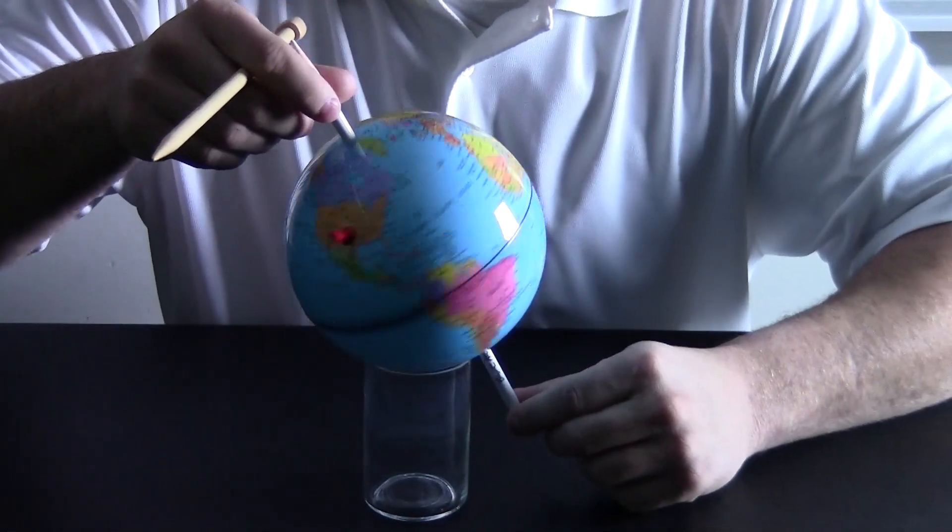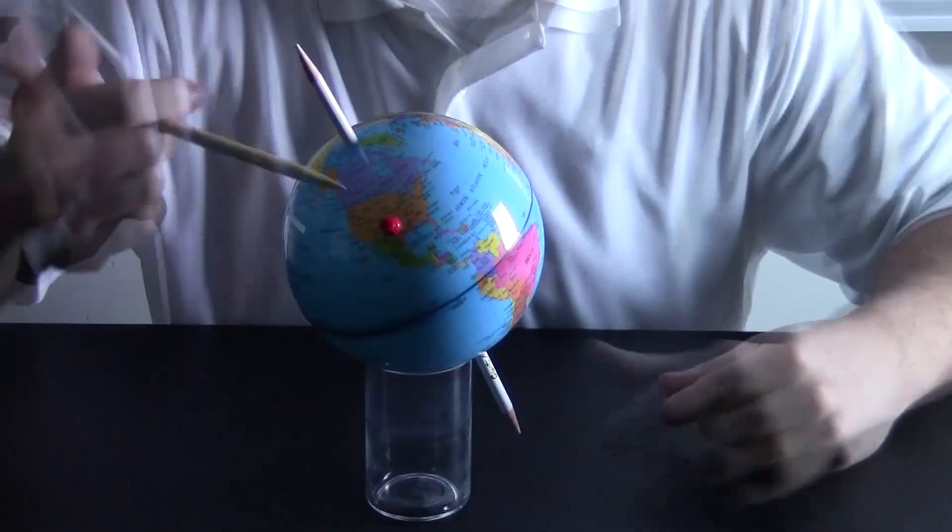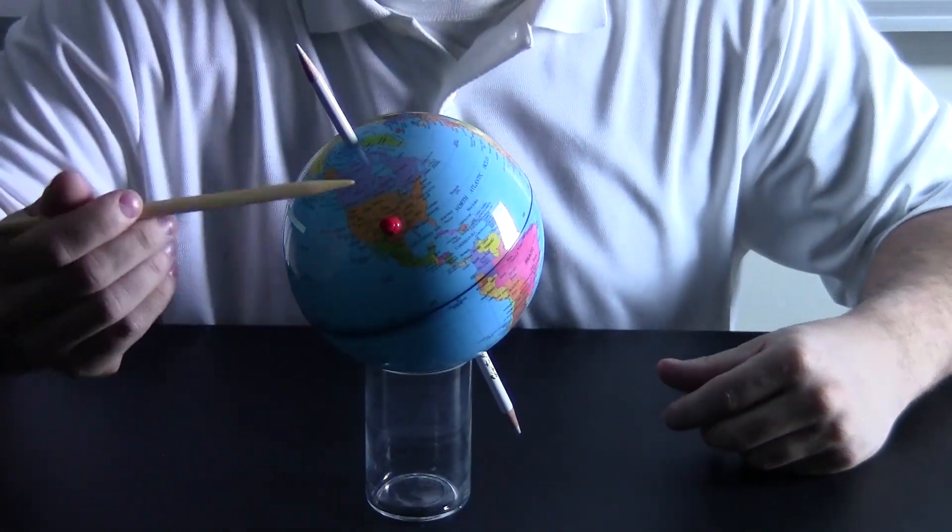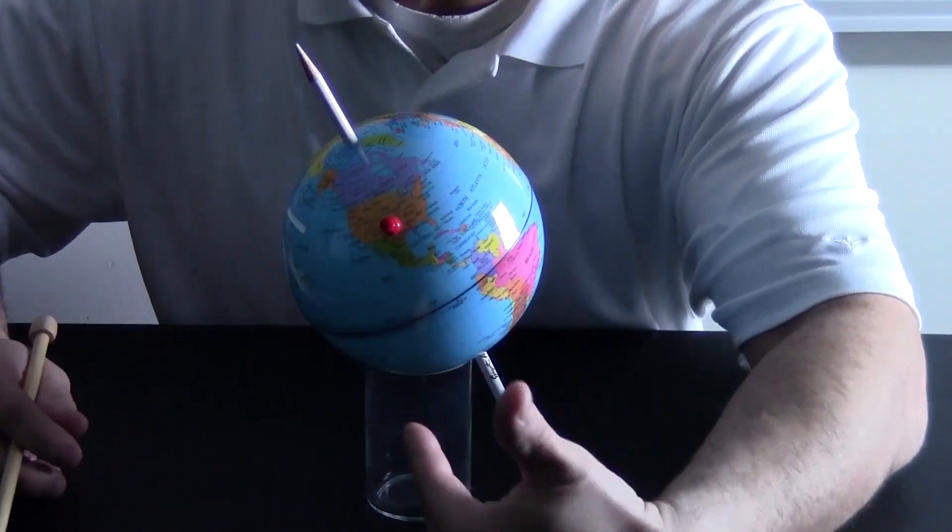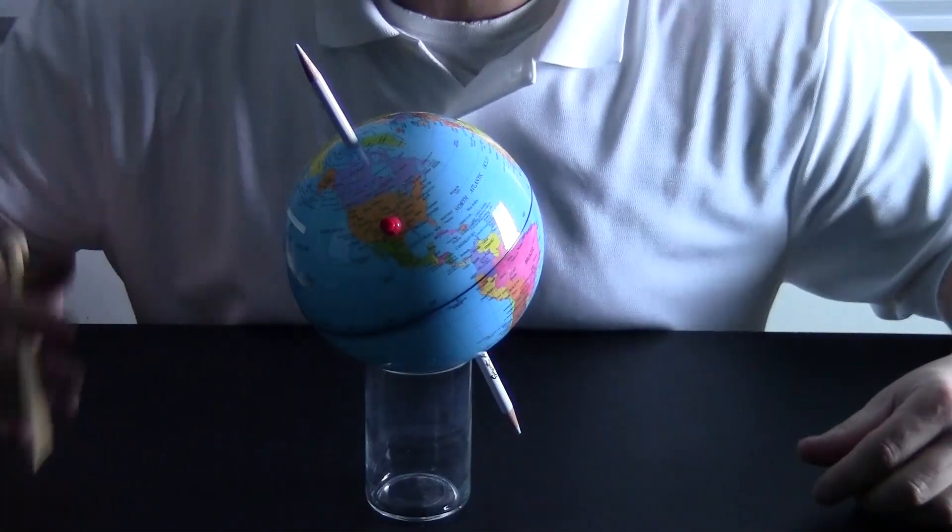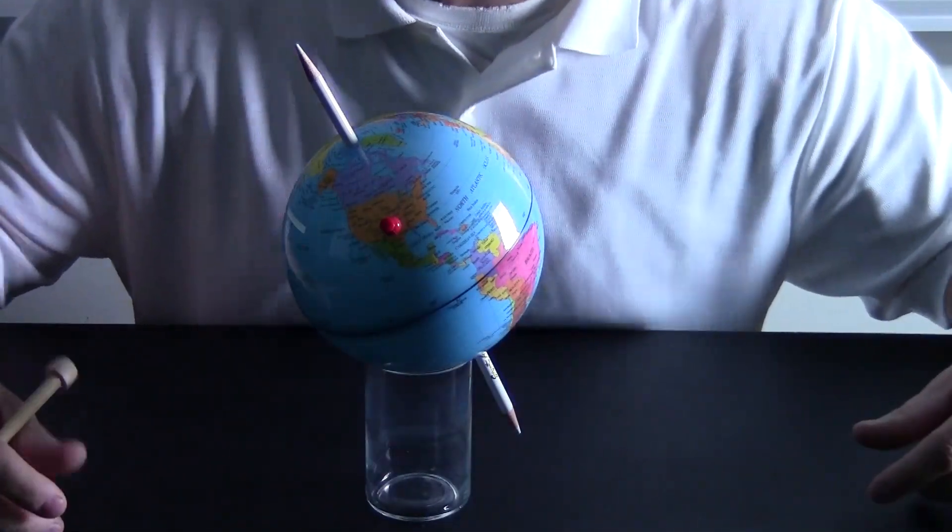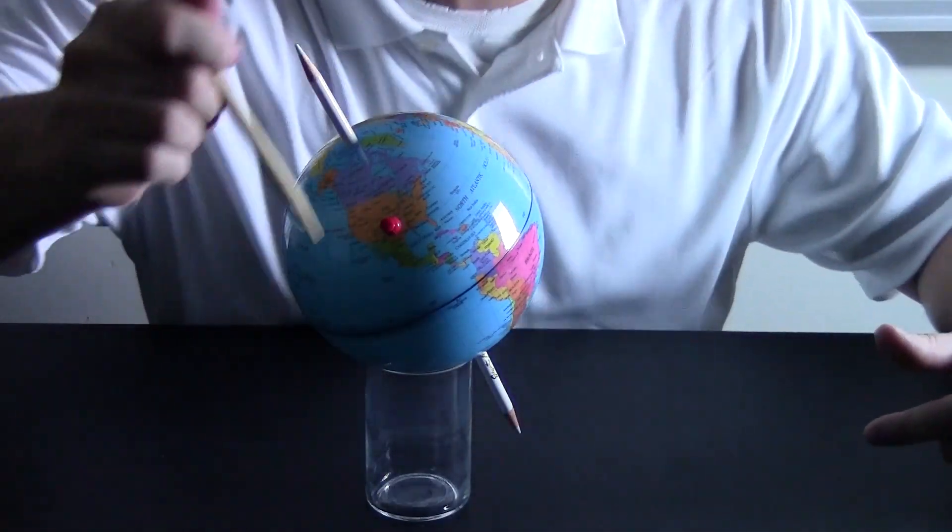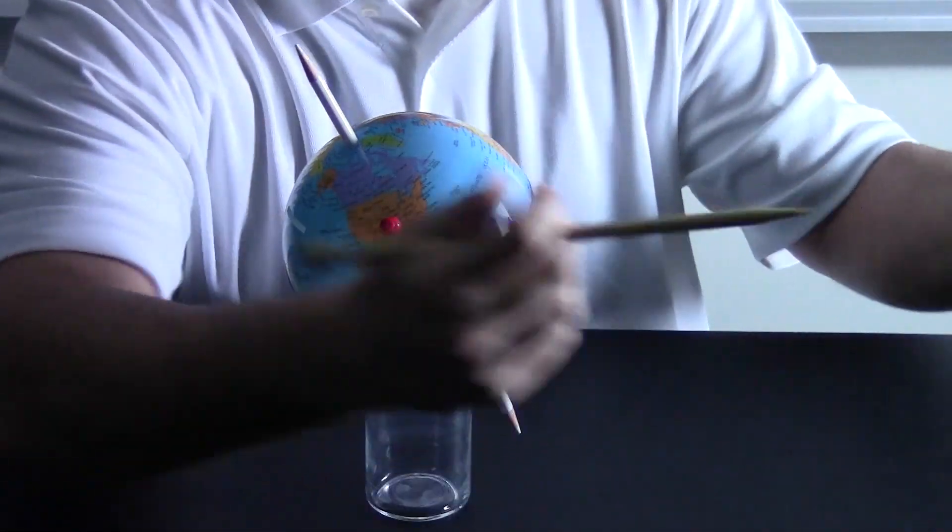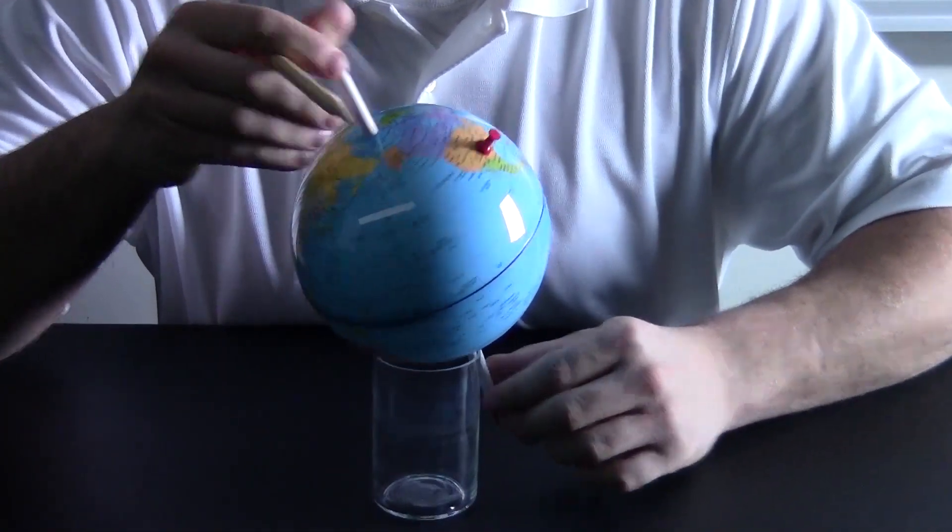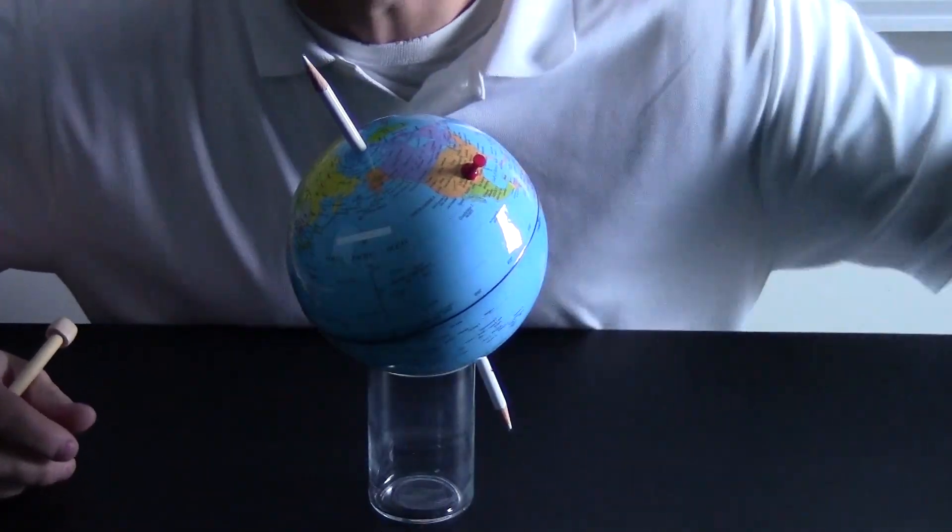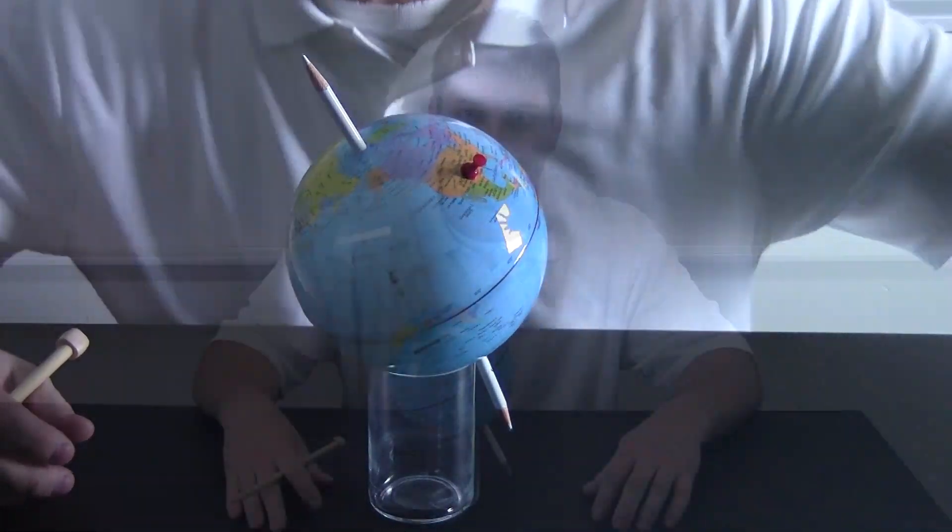Fast forward six hours, and now you can see our pushpin right on the morning line. Just as the sun appears to rise in the sky, it's actually us spinning back around to face the sun. We're the ones moving, not the sun. It stays in the same spot.